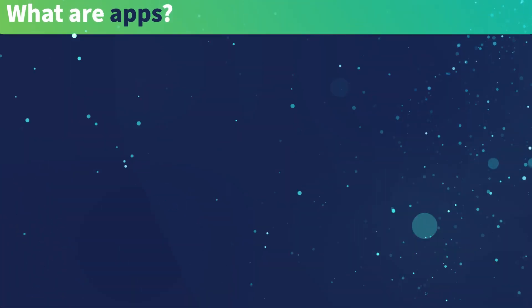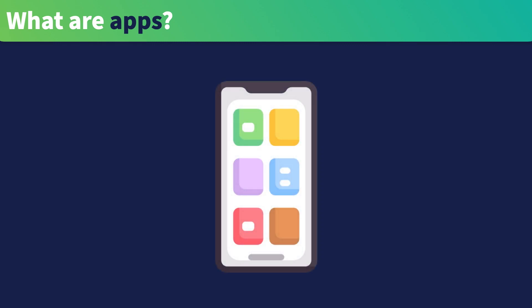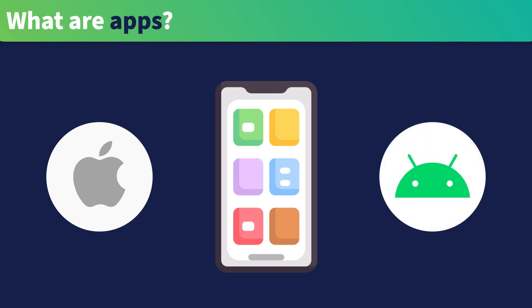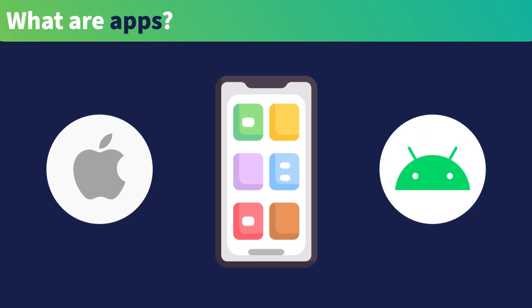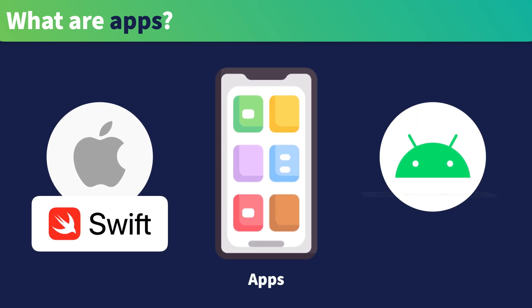When someone mentions installing an app, the first thing that most people probably think of are mobile apps. And when it comes to mobile apps, there are two major ecosystems: iOS from Apple and Android from Google. These apps are respectively built with the languages Swift and Kotlin.